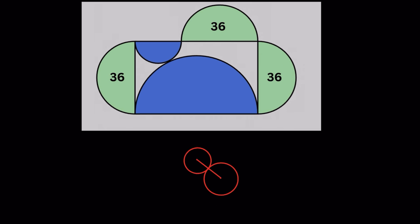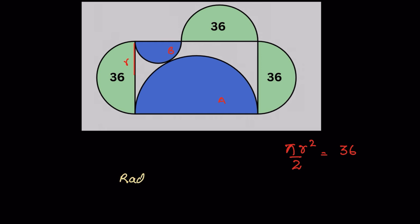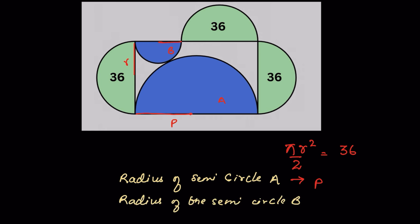Consider the radius of this semi-circle with area given as 36 is R. Pi R squared upon 2 equals 36. Let this be semi-circle A and let this be semi-circle B. Let the radius of semi-circle A be P and the radius of semi-circle B be Q.